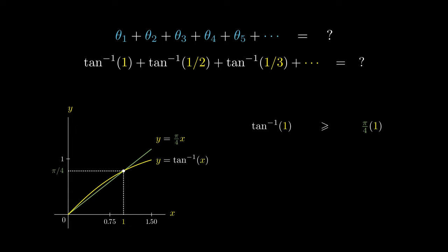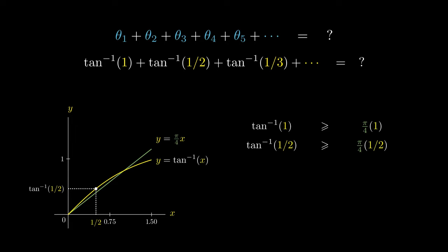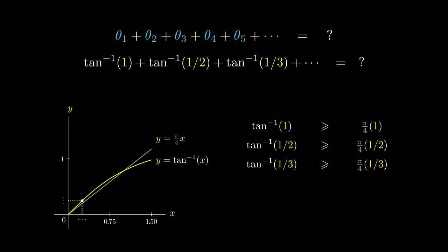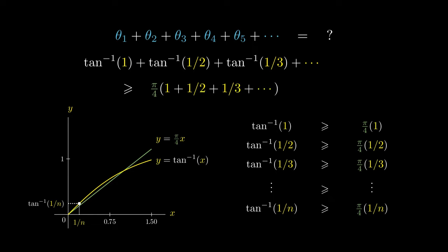However, if we decrease the input to consider the arctangent of a half, since the curve lies above the line, the arctangent of a half is not less than pi over 4 times a half. For a rigorous justification, check out the document in the description box below. Likewise, for the input 1 over 3, the arctangent of 1 over 3 is not less than pi over 4 times 1 over 3. We can repeat this process and see that the arctangent of 1 over n is not less than pi over 4 times 1 over n. This means we can lower bound the sum of the arctangents with the sum pi over 4 times (1 plus a half plus a third, so on and so forth).